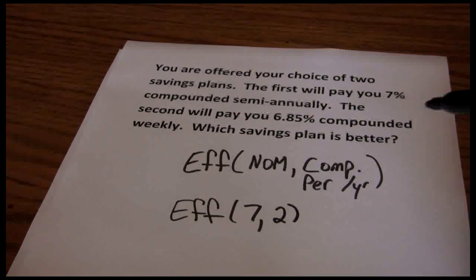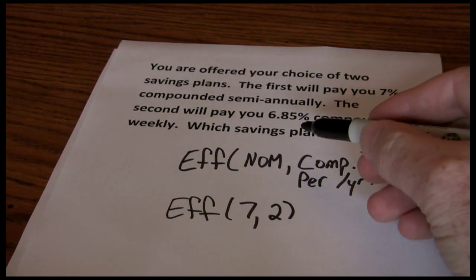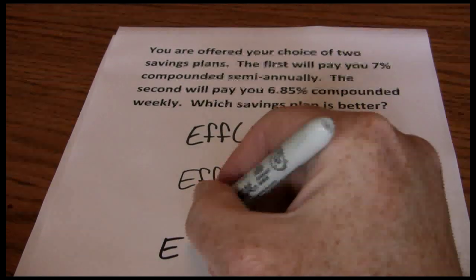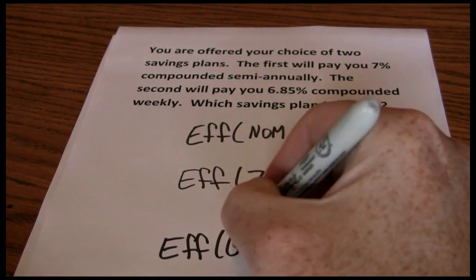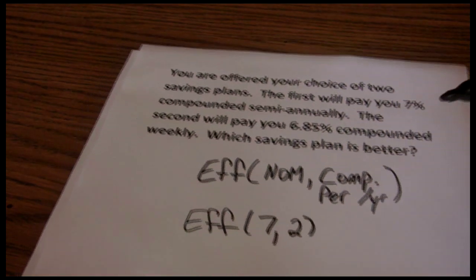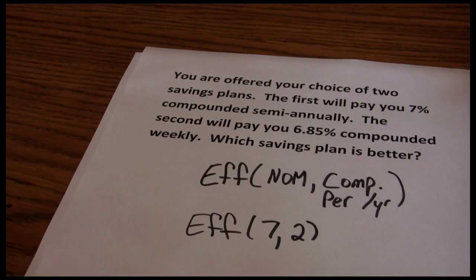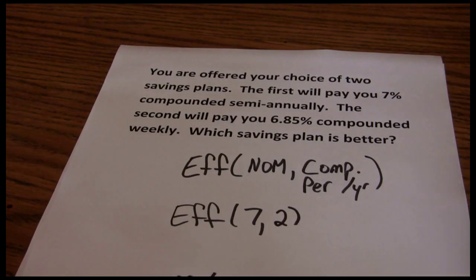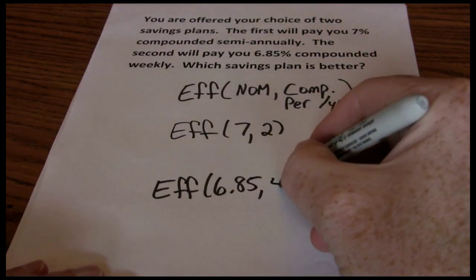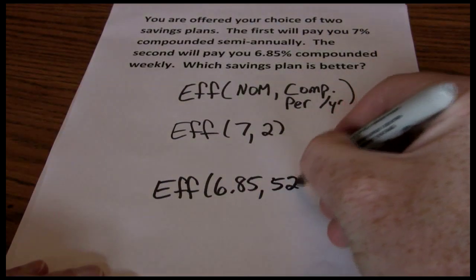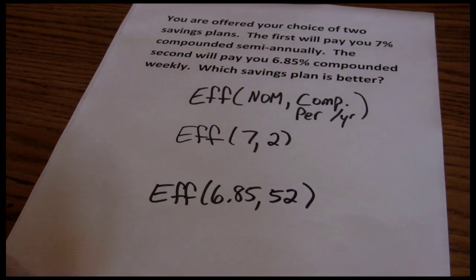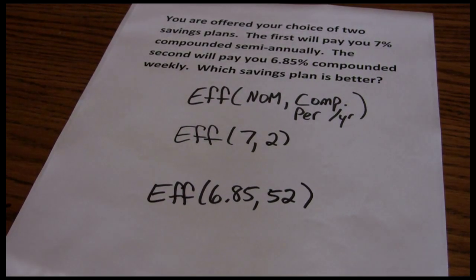In our second situation, our nominal rate is 6.85% and it's compounded weekly. Weekly is 52 periods per year. So now we can figure out our effective annual interest rate for both of those.